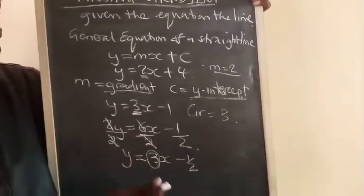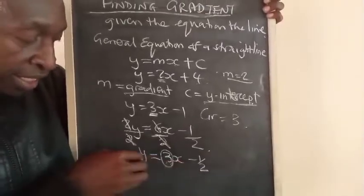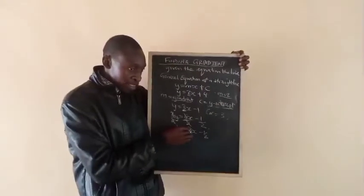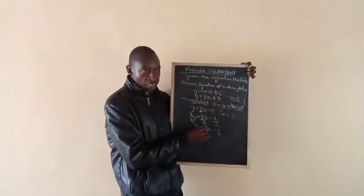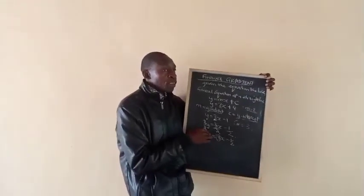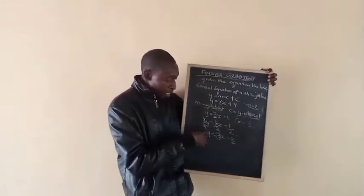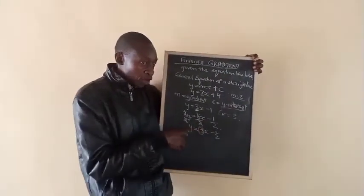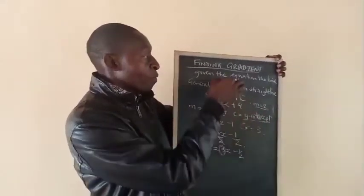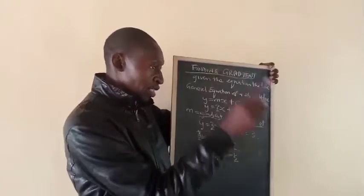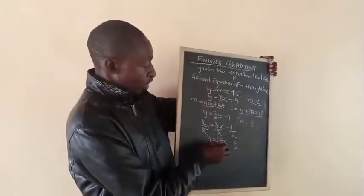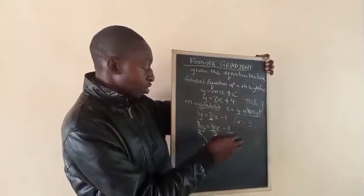Gradient yedu ndiyo number iri before x, kana wakukuna y. Number iri before x ndenunzi coefficient ya x. The coefficient of x when we have the y on the other side. Y equals, iyo coefficient ya x, kana wakuna y ndiyo gradient. Saka, when we have points, we use y minus y over x minus x. When we have equation, tinongota coefficient ya x. Coefficient ya x yoyo ndiyo gradient.